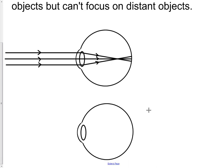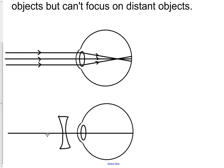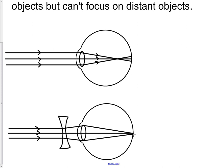For far-away objects a short-sighted person sees something blurry, so to correct it we use a diverging lens. What the diverging lens does is make these rays diverge a little bit. In your diagram you need to show the parallel rays of light being diverged slightly by the diverging lens, because diverging lenses diverge parallel rays as if they've come from a focal point. The eye then converges them, and if the diverging lens has been chosen correctly it brings the light to a nice sharp focus at the retina, correcting the short sight.